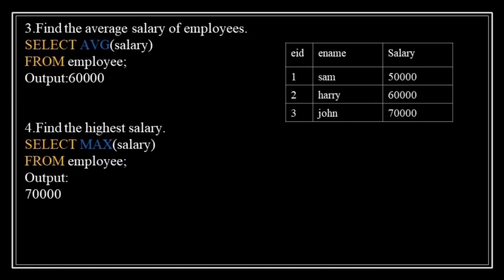The next query calculates the average salary: SELECT AVG(salary) FROM employee. 'SELECT AVG(salary)' tells the database to calculate the average salary. If the employee table has Sam with 50,000, Harry with 60,000, and John with 70,000, the average salary is calculated by summing all salaries and dividing by the number of employees. The query returns 60,000 as the average salary — a quick way to get an overall view of employee compensation.